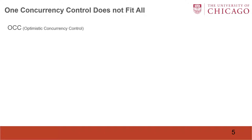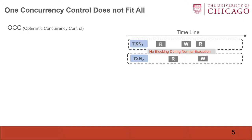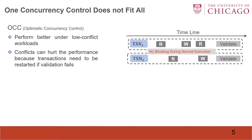In that case, we may consider optimistic concurrency control. It does not block transactions' normal execution and puts all writes into a private buffer. After that, it validates whether transactions violate serializability. It performs well under low-conflict workloads, but conflicts can hurt performance, because conflicts can cause transaction validation to fail and restart the transaction.